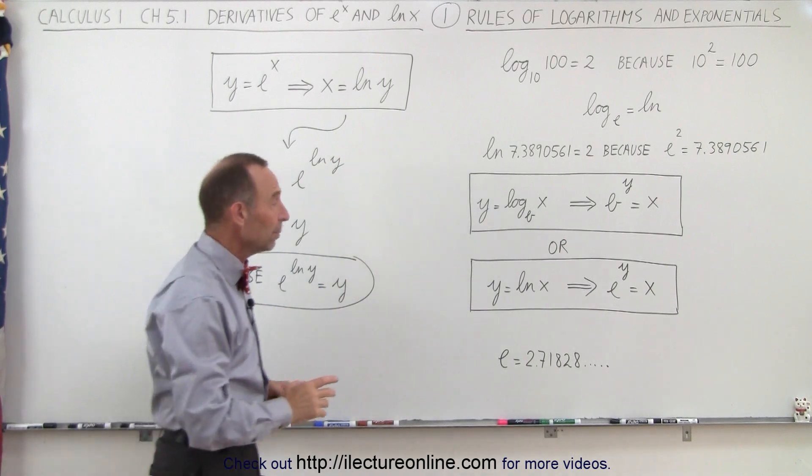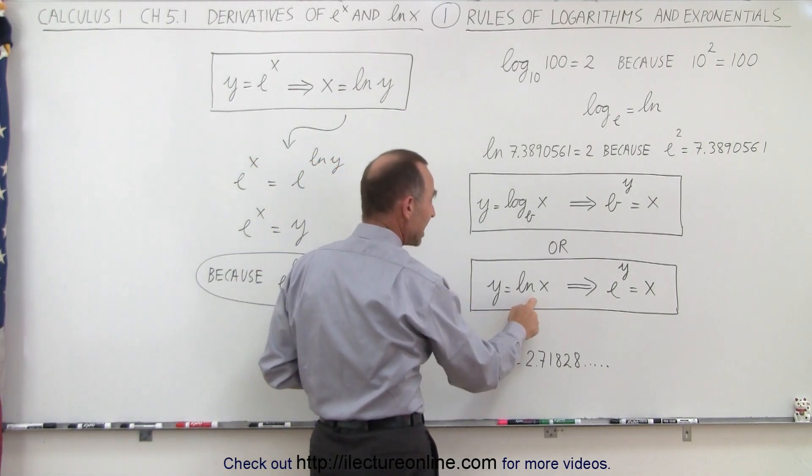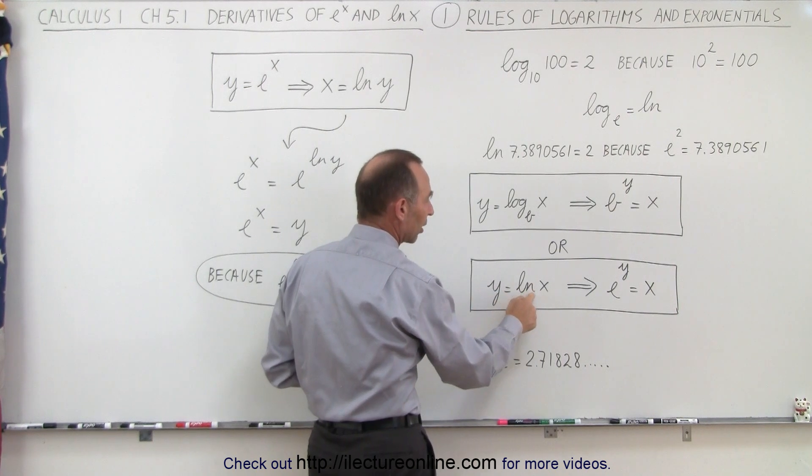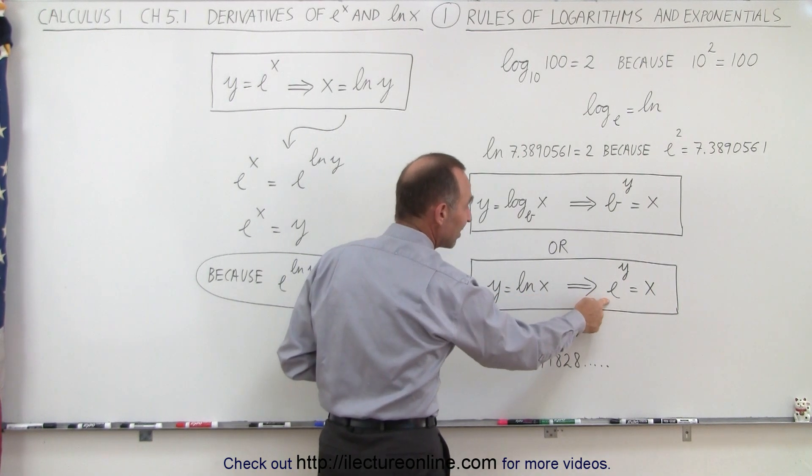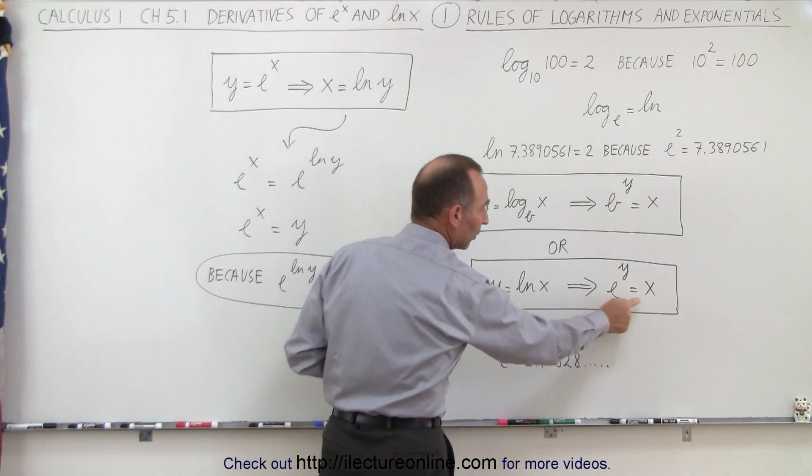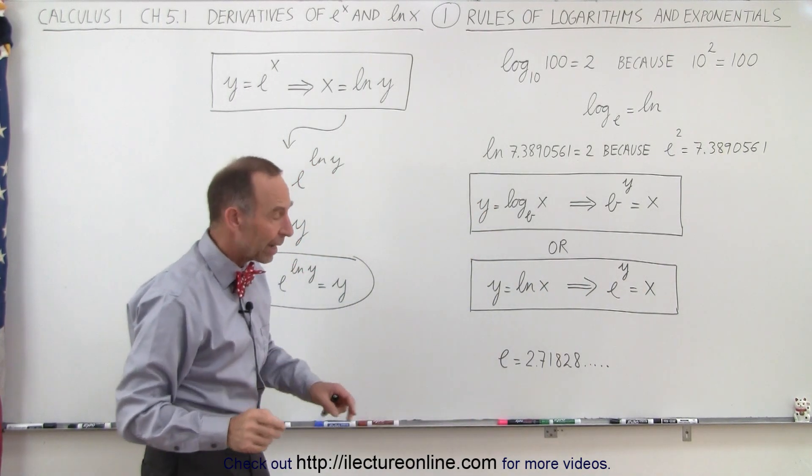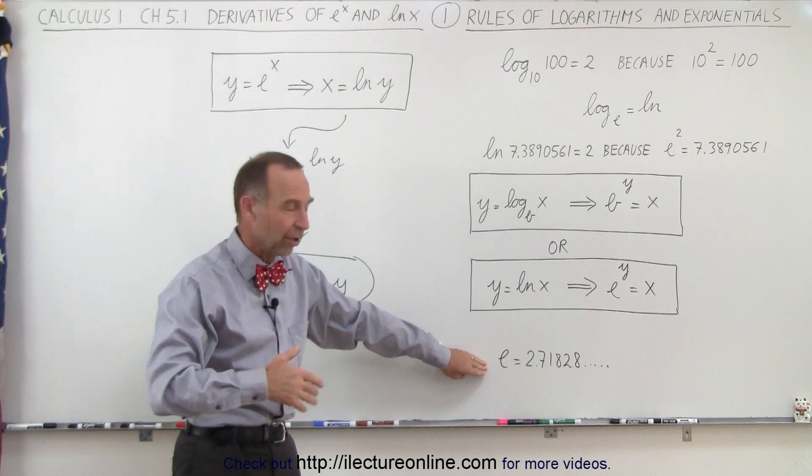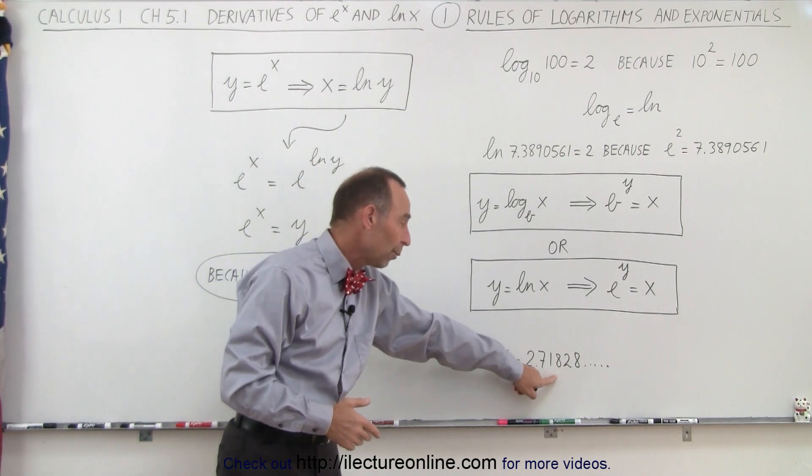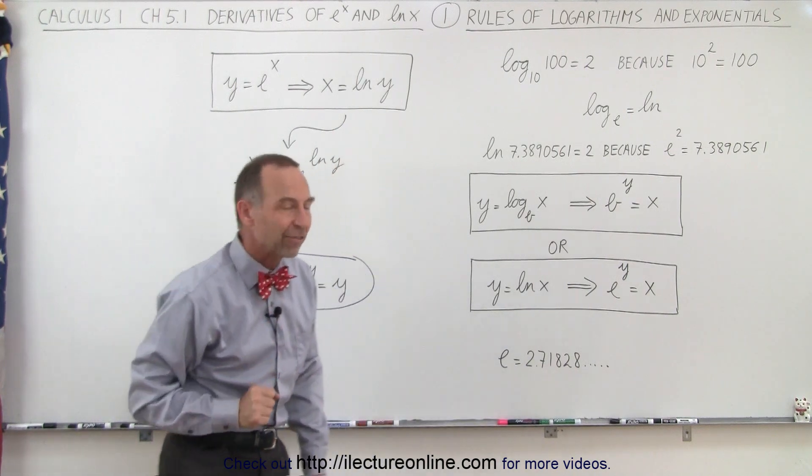When we use natural logarithms, since the base is e but we don't write it, we can say that y equals the natural log of x means that e raised to the exponent y equals x. Keep in mind that the natural number e, which is a non-repeating decimal, is equal to 2.71828 to five decimal places.